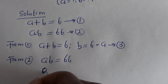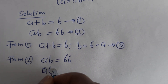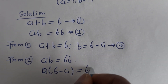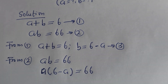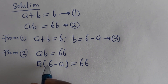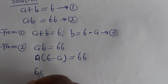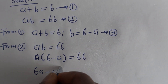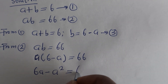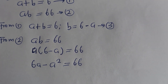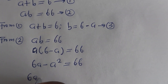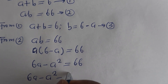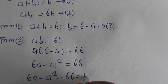Substituting equation 3 into equation 2: A multiplied by (6 minus A) is equal to 66. Let us open the bracket: 6A minus A squared is equal to 66.